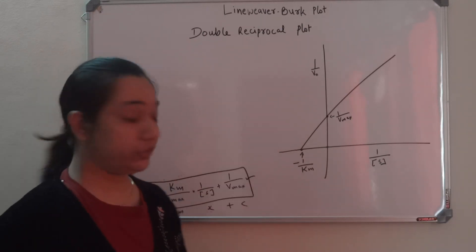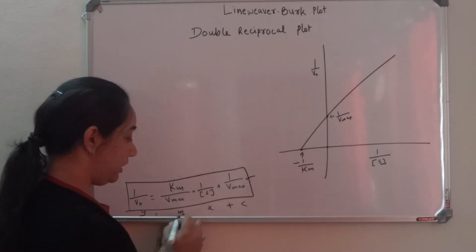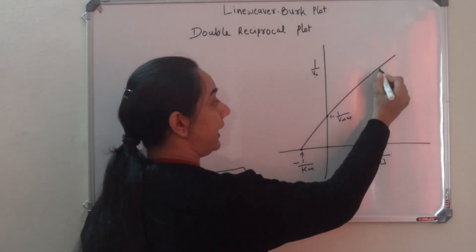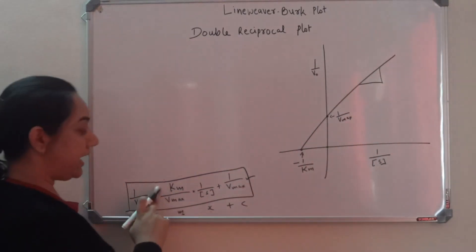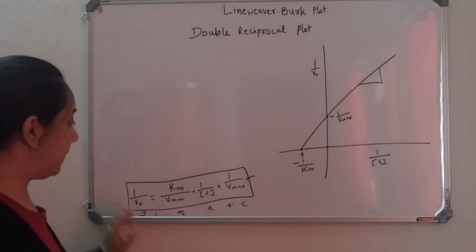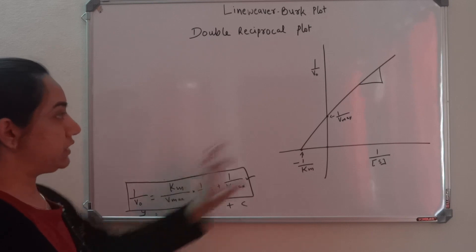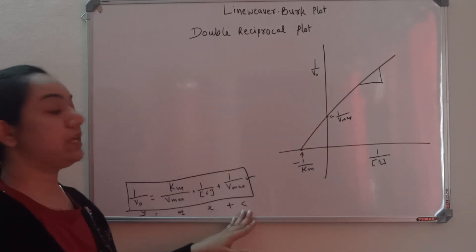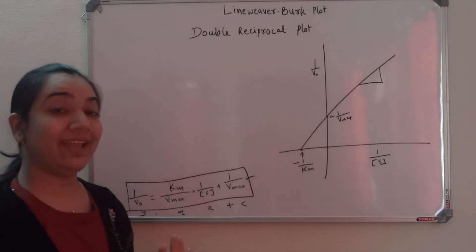I forgot to mention - M in the equation is the slope. The slope of the line is M, which is Km by Vmax. So you have y as 1 by V0, M is our slope, x-axis is 1 by substrate concentration, and C or the y-intercept is 1 by Vmax.